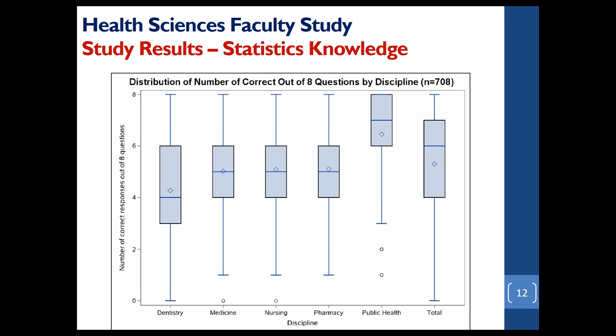This box plot shows the overall performance of faculty members on the statistics knowledge questions — the number of correctly answered questions out of eight. It can clearly be seen that public health outperformed all other four health science disciplines, with dentistry performing at the poorest level, and medicine, nursing, and pharmacy performing roughly side by side.